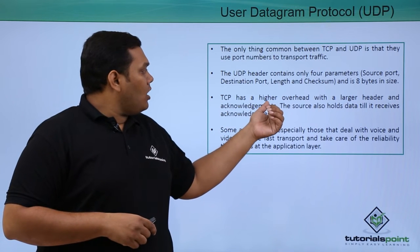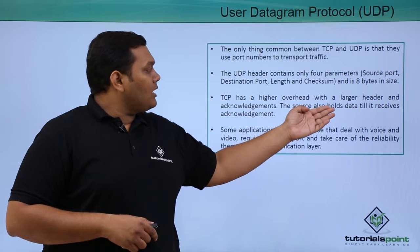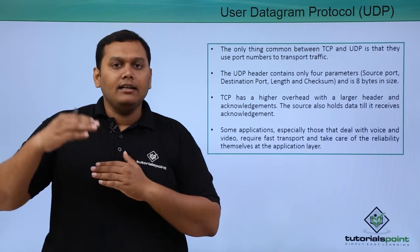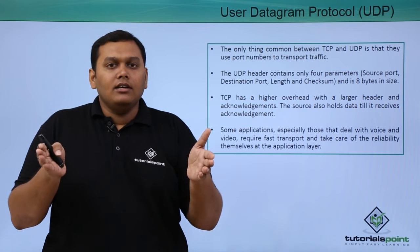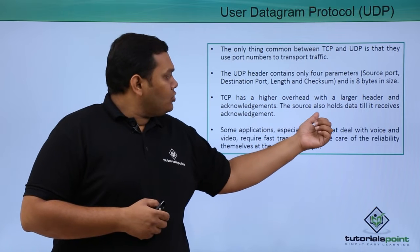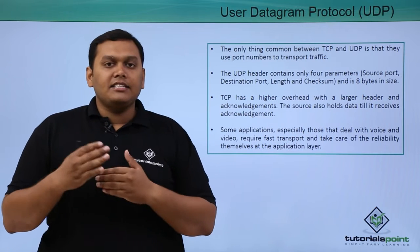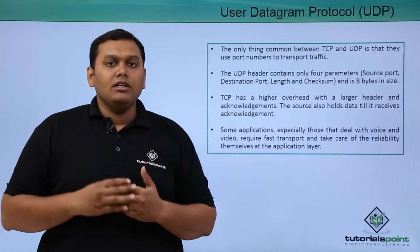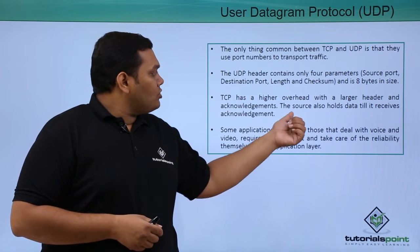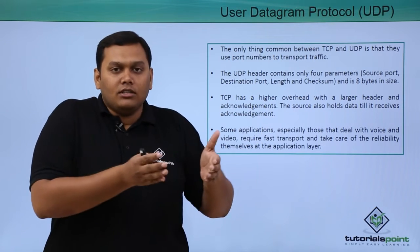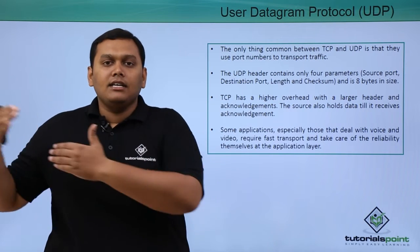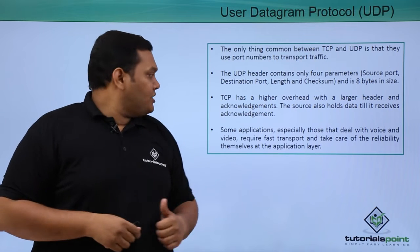TCP has a higher overhead with a larger header to store acknowledgement information. The source also holds data after sending it to the destination until it receives an acknowledgement back from the destination.